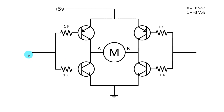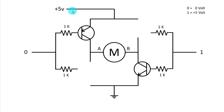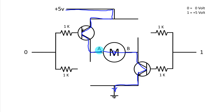Now we will provide 0 on this side and 1 on this side. When we provide 0, the PNP transistor works as a closed circuit and the NPN works as an open circuit. Here with 1, the NPN transistor works as a closed circuit and the PNP works as an open circuit. Current now flows from plus 5V through pin A to pin B and to ground. Now the motor is running in the other direction — before it was B to A, now it is A to B. This is how we can control the motor direction using transistors.